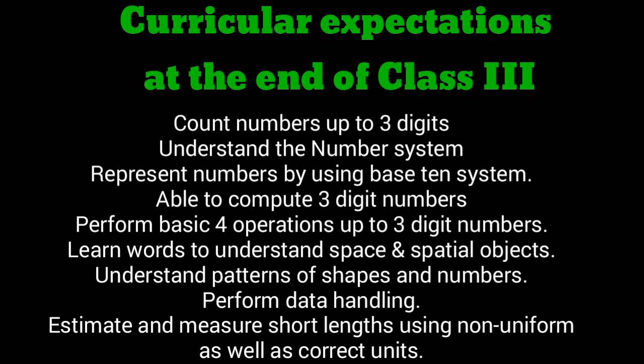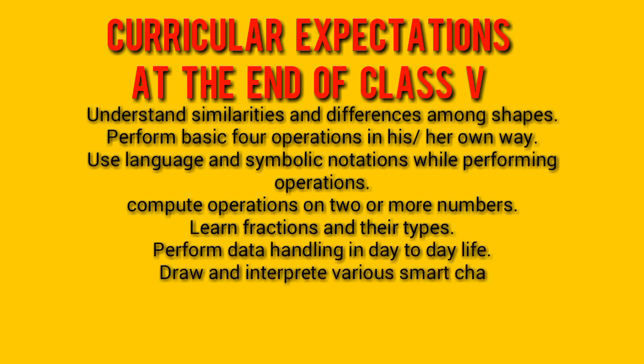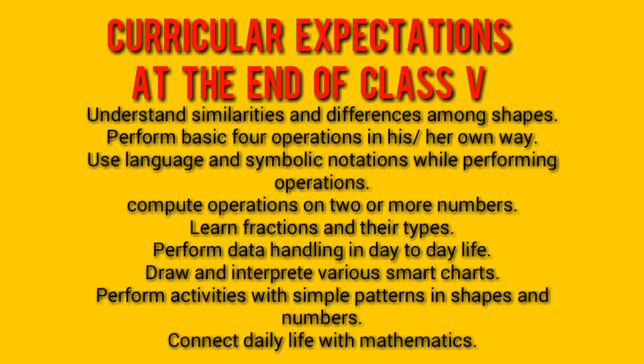Now we will learn the learning outcomes at the end of class 5. Children understand similarities and differences among shapes — for example, they find out the similarities and differences between a square and a rectangle, or the shape of a triangle, rectangle, and circle.